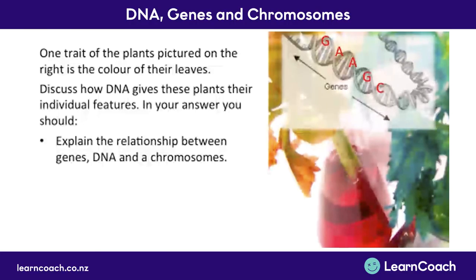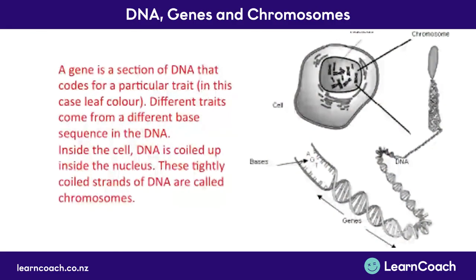Now that we understand that, we can look at how it fits together inside these cells. We have our bases - these are the code. This code will dictate whether it's yellow leaves or green leaves. That code will be on the gene for leaf colour. That gene is going to be part of a long strand of DNA that exists inside every cell of the plant. So we've got our DNA, broken up into genes, and that DNA is coiled up really tightly into chromosomes so that it can fit in the nucleus of the cell.